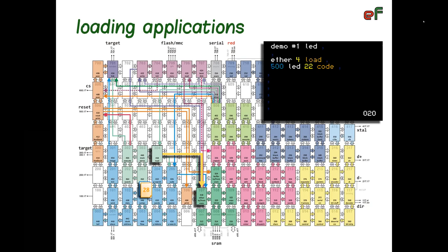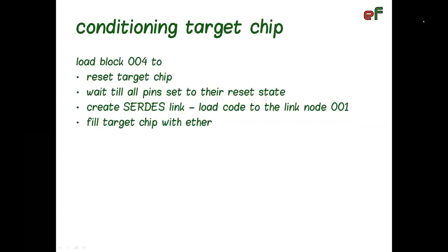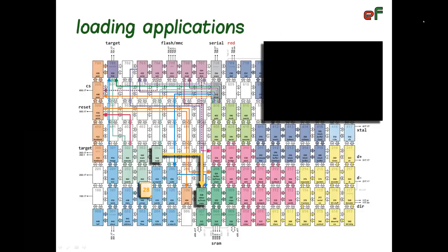When found in dictionary and executed, it stops interpretation of block 20, keeps current block number and interpretive pointer position in node 203. Then it pops number 4 from stack and builds an ether message requesting that block from SRAM. This demonstrates how block loading can be nested. Four levels of nesting are possible. It also shows that command load can be used both in command line as well as in load blocks. Block number 4 contains a special code that conditions the target chip.